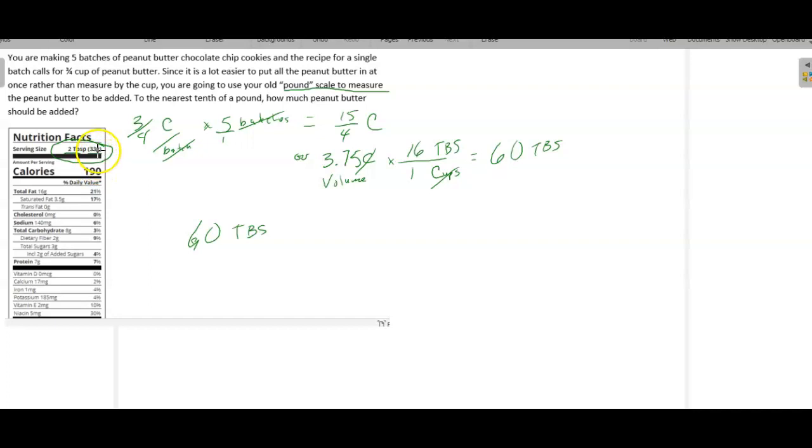If we want to convert that, we need to find out how many pounds that is. The only information I see here is that 2 tablespoons of this peanut butter that we're going to use. This would be the label on the back of the jar we might use. So we want to go from tablespoons to grams. And it says 2 tablespoons is equivalent to 33 grams.